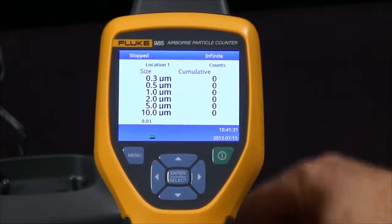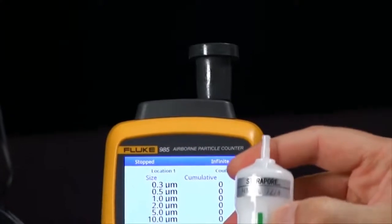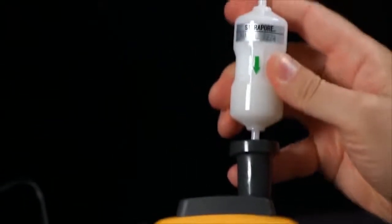To establish a baseline we provide an adapter which goes over the sample port and a zero pass filter. You will see the direction of airflow is indicated by the green arrow. Simply insert this into the adapter.